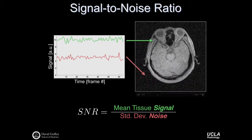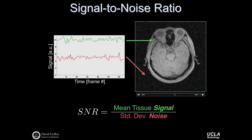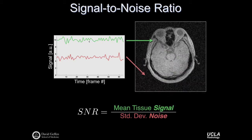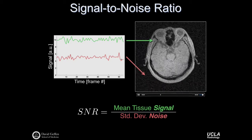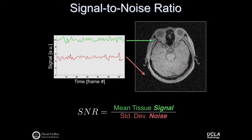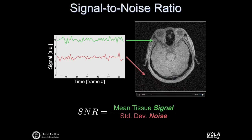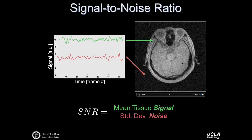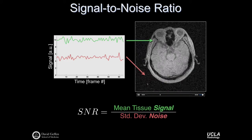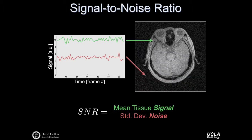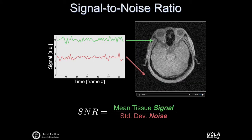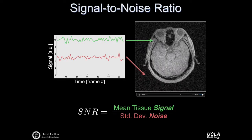In this example, we could take the mean pixel intensity for a single pixel. Since we have temporal information, we could take the mean as a function of time and calculate the noise signal in the background as the standard deviation of the signal across time. In more practical examples, we don't have a time series, so we'll typically have a single image. In that case, we can estimate the standard deviation in a region of interest outside the object in the background as representative of the noise variance, and take a small ROI within homogeneous tissue to estimate mean signal.